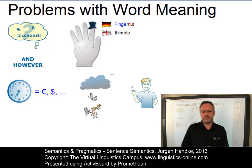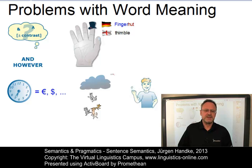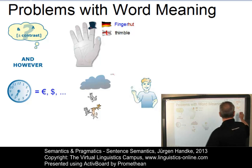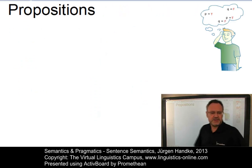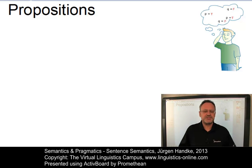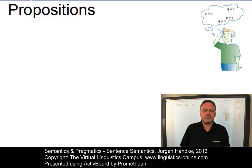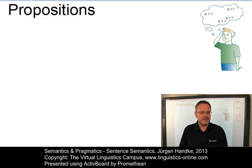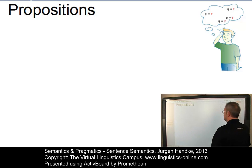A central approach towards sentence meaning assigns truth values to sentences. This approach is referred to as propositional logic and it treats sentences as propositions. In logic, the meaning of sentences is defined in terms of statements or propositions and not just in terms of the sentence itself. One argument in favor of this treatment is that different sentences may be converted into identical propositions. Let's illustrate that.